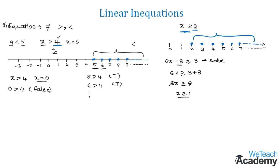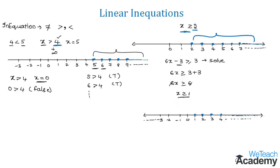Now let us find the values of x on a number line. The values greater than 1 are 2, 3, 4, and so on. Since x is greater than or equal to 1, the number 1 is also included in the solution set. Therefore, the solution set for x ≥ 1 includes all numbers from 1 to infinity.